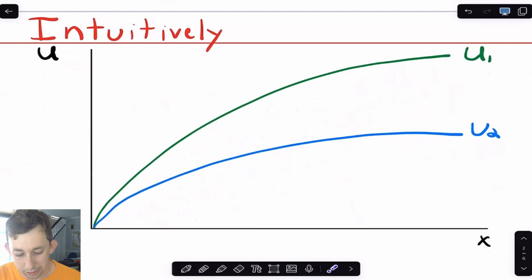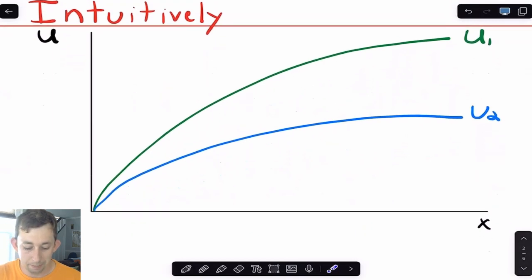So first, I just want to talk intuitively about this Arrow-Pratt measure of risk aversion. What we're trying to do is measure how risk averse a certain utility maximizer is. If we have two risk averse utility maximizers, we're basically trying to say okay, person two, which I've drawn their utility function in blue, they are more risk averse than person one whose utility function I've drawn in green.